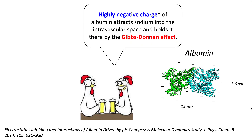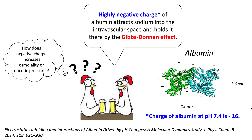This is because albumin is a highly negatively charged ion and it is able to hold on to positive ions by using something called the Gibbs-Donnell effect. The charge of albumin at pH 7.4 is around minus 16. So let's see what the Gibbs-Donnell effect is.